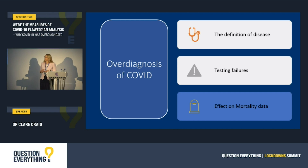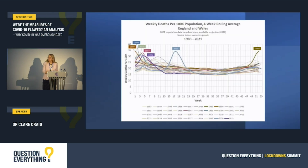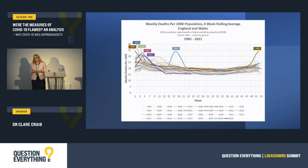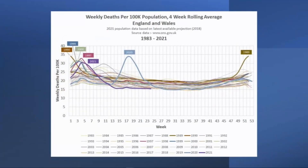Understanding the excess deaths takes a bit of context, and this graph shows deaths for different years per 100,000 people in the population — adjusted for the size of the population. You can see the light blue line of 2020 and 2021 in purple. The magnitude of this excess death curve is not extraordinary. What's most odd is the timing of the 2020 curve, but we have had previous years with similar amounts of death.